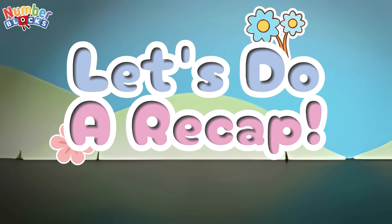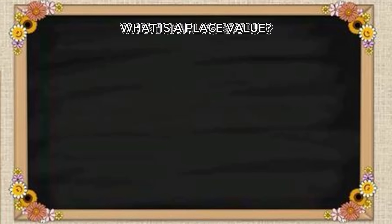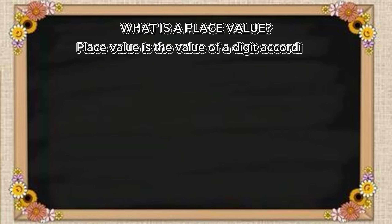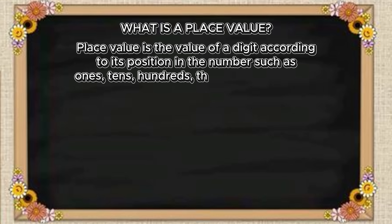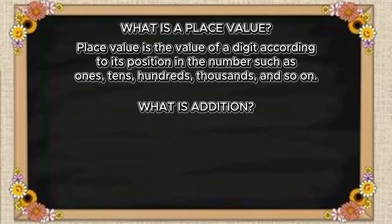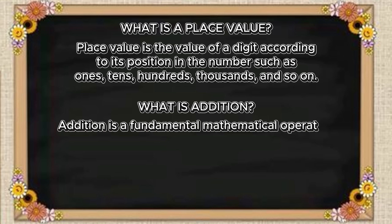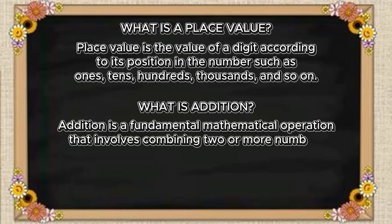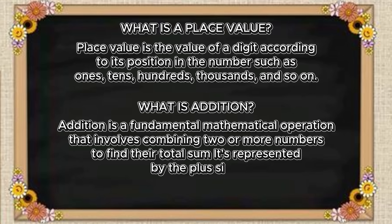Let's summarize. Join me and let's learn what is a place value. Place value is the value of a digit according to its position in the number, such as ones, tens, hundreds, thousands, and so on. On the other hand, what is addition? Addition is a fundamental mathematical operation that involves combining two or more numbers to find their total sum. It's represented by the plus sign.